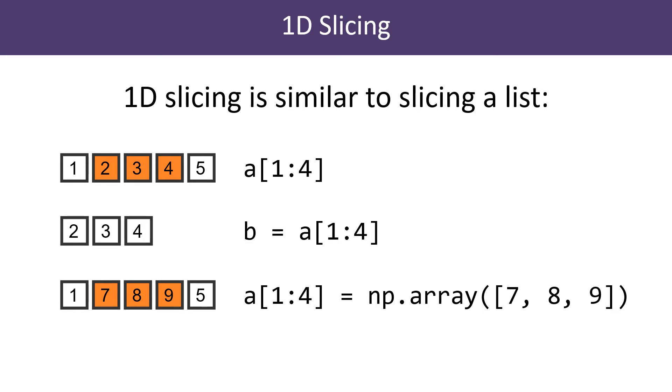If we assign this slice to variable b, then b will hold a three-element array. We can also assign a new array to the slice, which will overwrite just the elements of the slice. The array we assign must be the exact same size and shape as the slice we are replacing.